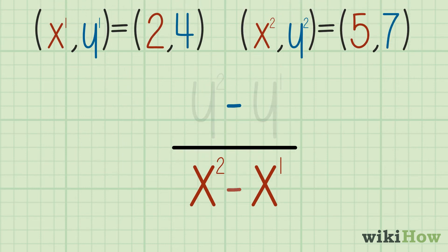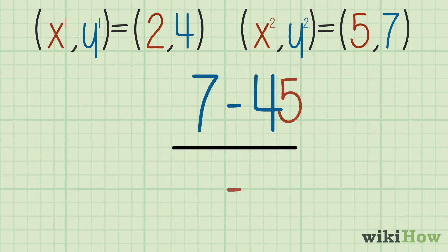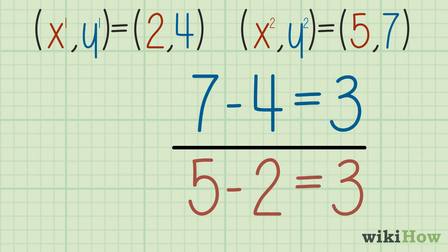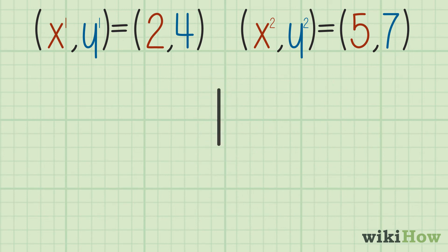In our example, the rise would be 7 minus 4, while the run would be 5 minus 2. This means the slope of the line would be 3 over 3, or 1.